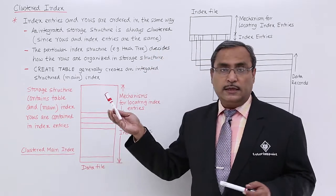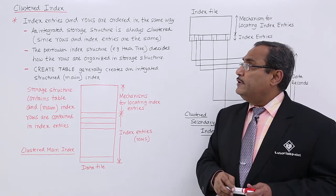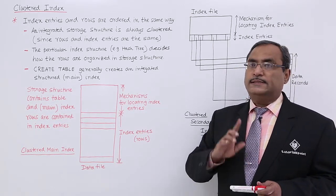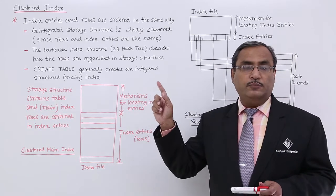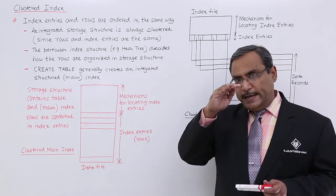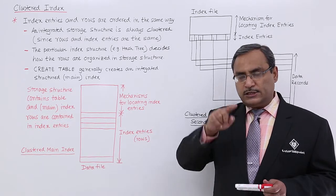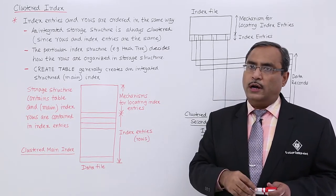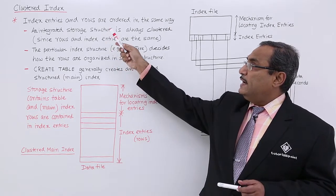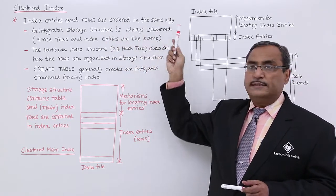What is a clustered index and what are its varieties? Index entries and rows are ordered in the same order. That's an important feature of clustered indexes. The index entries are organized in such an order that the rows are also organized according to that same order.